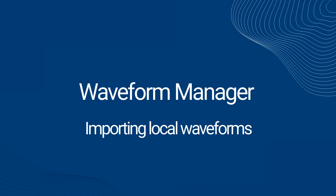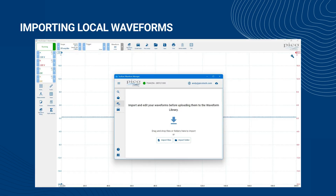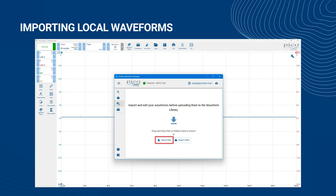Section 2 – Importing Local Waveforms. The feature gives you three ways to import your waveforms: by dragging and dropping, by searching a folder and its subfolders, or by selecting specific files. We'll demonstrate the drag and drop method in this guide. The other methods follow your operating system's usual steps for selecting files and folders.